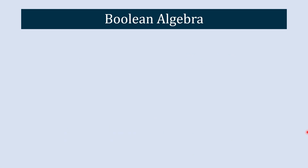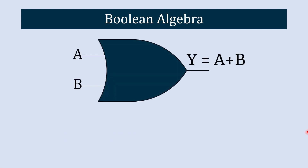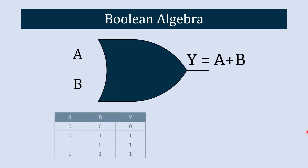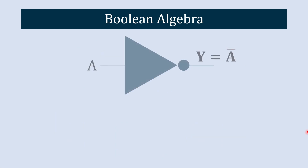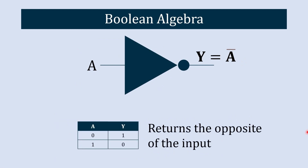The next operator is the OR operator. This operator returns one if at least one of the inputs is true or one — it is simply known as the addition operator. The next operator is the NOT operator. This operator returns the opposite of the input.